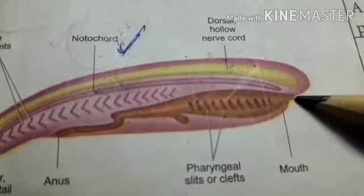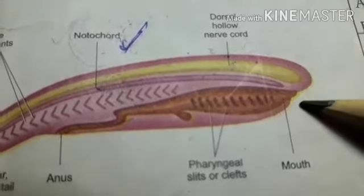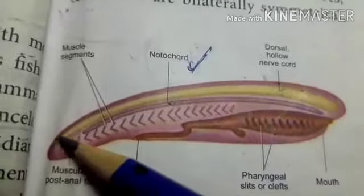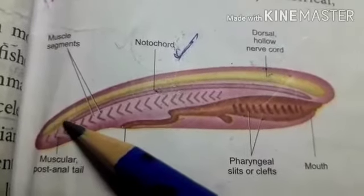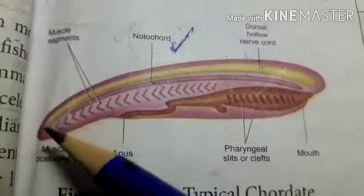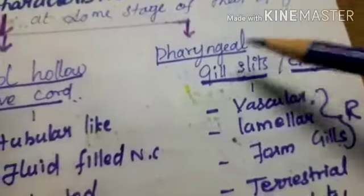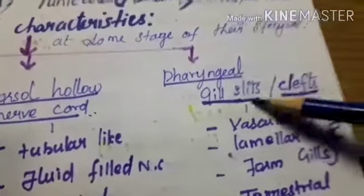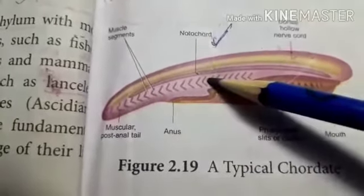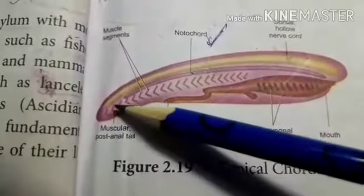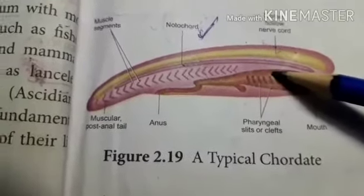This nerve cord is elongated — anteriorly it develops into the brain, and posteriorly it forms the spinal cord. In humans, the spinal cord is protected inside the vertebral column. The third fundamental characteristic is the pharyngeal gill slits and clefts. The post-anal tail is a muscular region. Pharyngeal slits and clefts are the main part of the third characteristic.